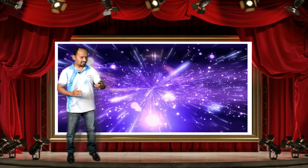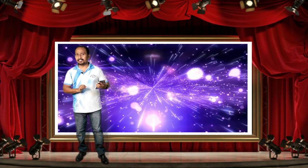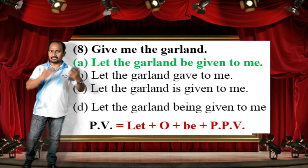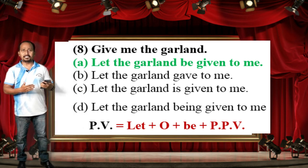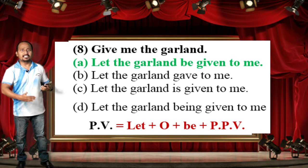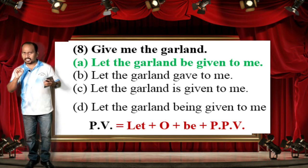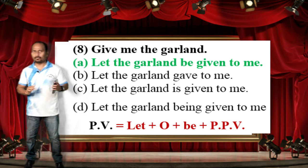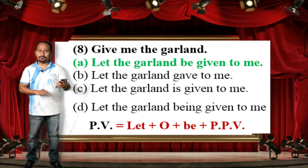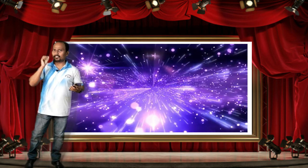The correct answer is option A: 'Let the garland be given to me.' The given sentence is an imperative sentence — it begins directly with a verb. For imperative sentences changed to passive voice, we use the formula: Let + Object + be + PPB. That is why option A is the correct answer.